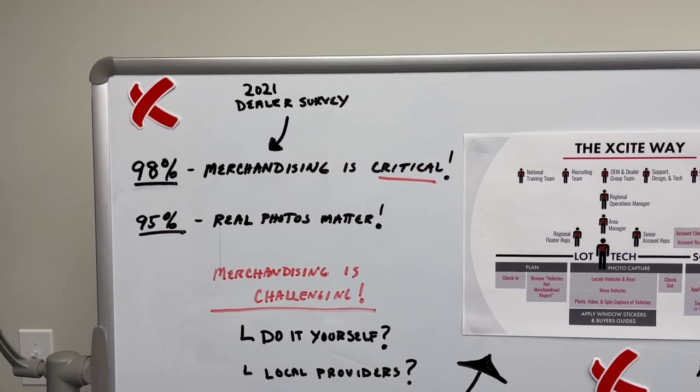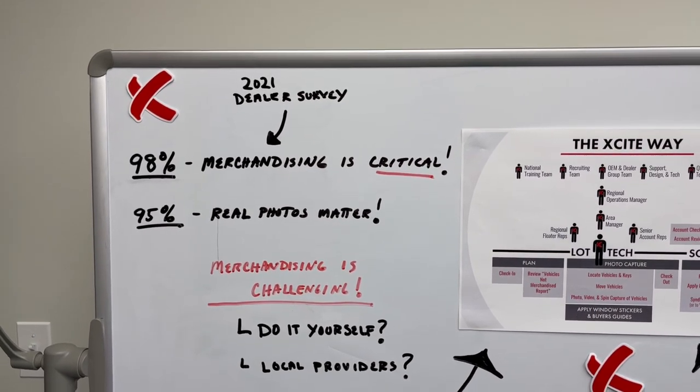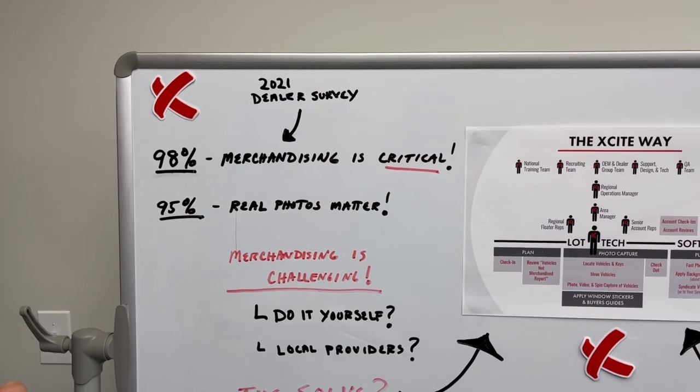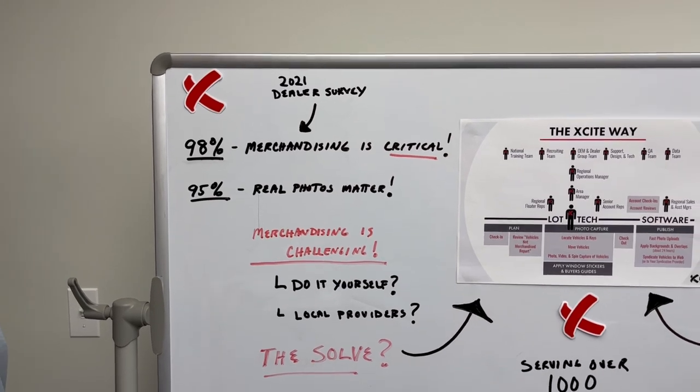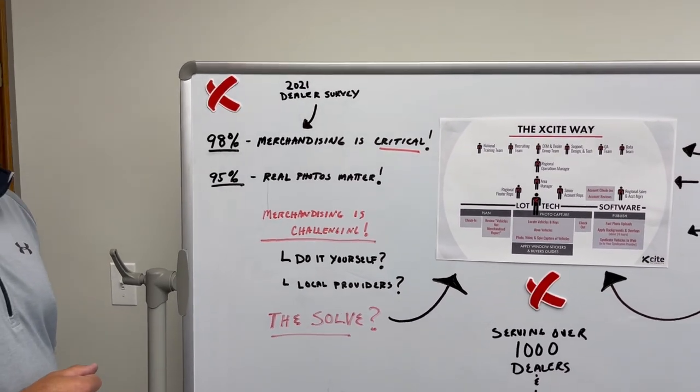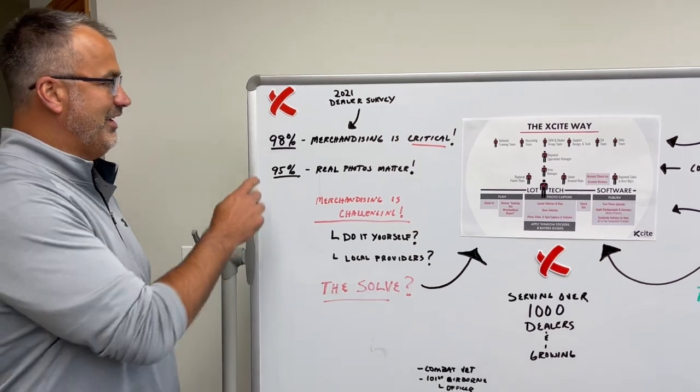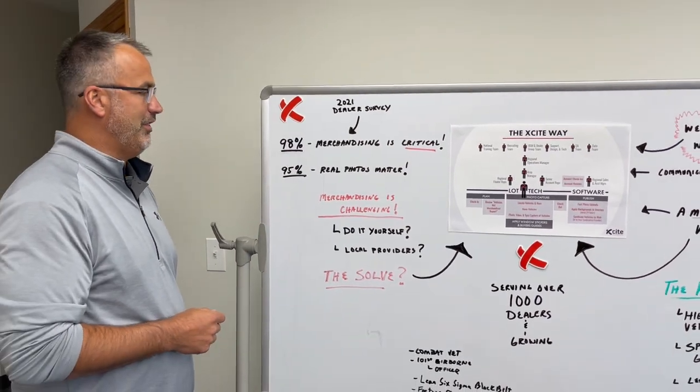In fact, 98% of dealers said merchandising is critical. They also said that real photos matter and that real photos will lead to increased online consumer usage and a better consumer experience. 95% of them agreed with that.